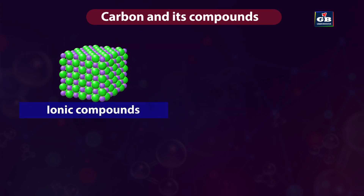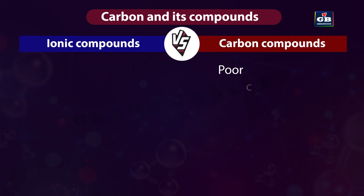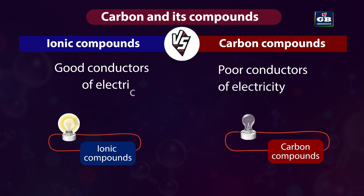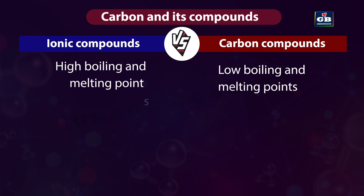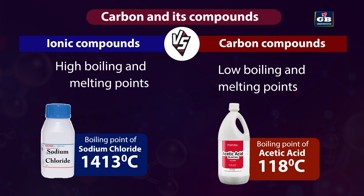We have already learnt about ionic compounds. Let us see some important differences between ionic compounds and carbon compounds. Carbon compounds are poor conductors of electricity — they do not conduct electricity — whereas ionic compounds are good conductors. The boiling points and melting points of carbon compounds are less compared to ionic compounds. For example, the boiling point of acetic acid, which is a carbon compound, is about 118 degrees Celsius, whereas the boiling point of an ionic compound like sodium chloride is 1413 degrees Celsius.